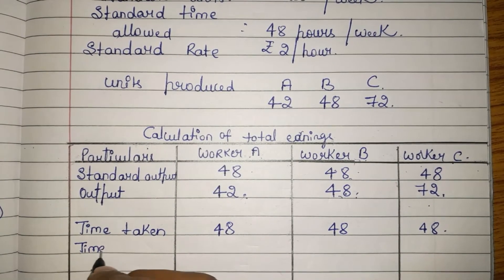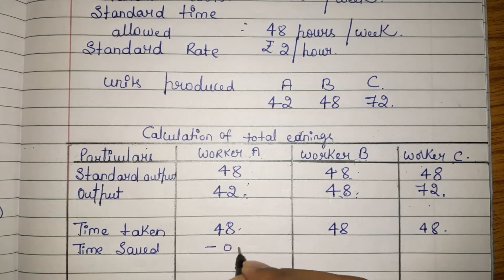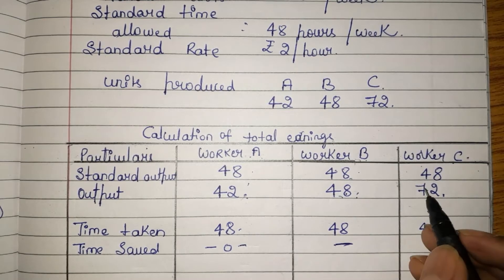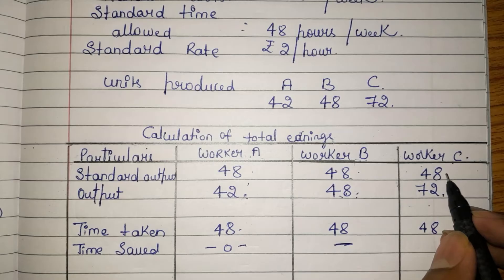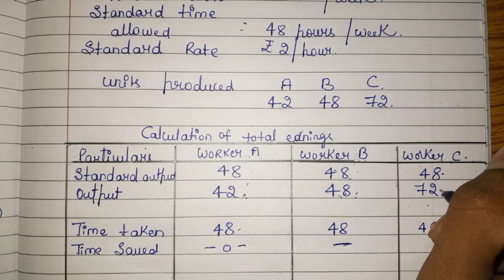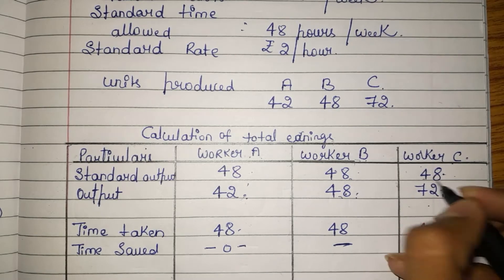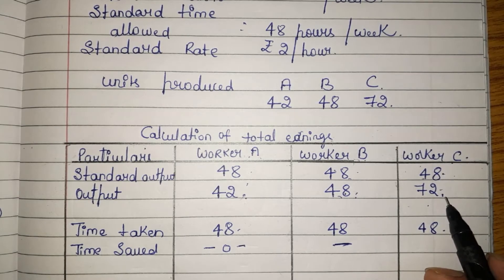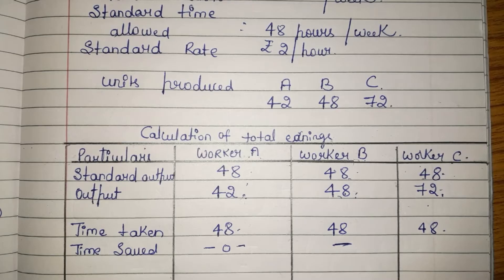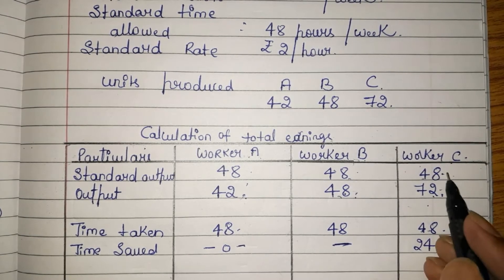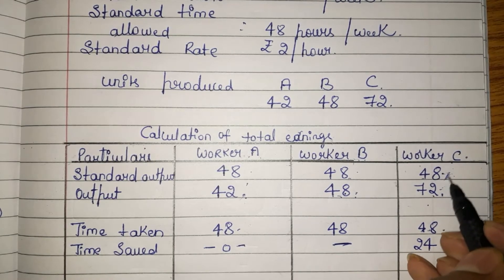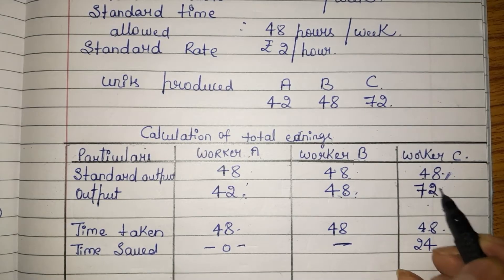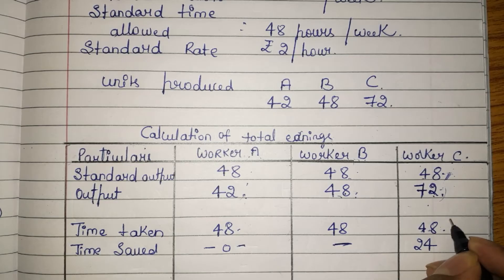Now be very careful here. For time saved: Worker A has not saved anything, so zero. Worker B has also not saved anything. But Worker C was supposed to produce 48 units and has instead produced 72 units — almost double. So we divide 48 by 2 to get the time saved, which is 24 hours.